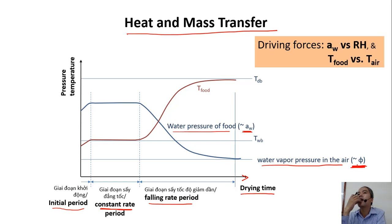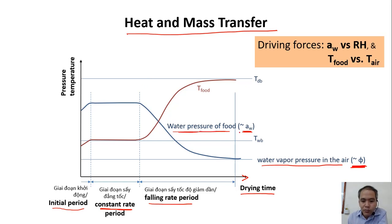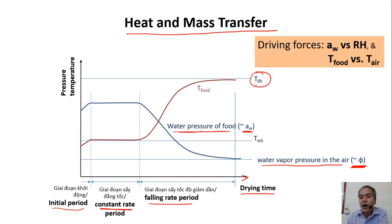The relative humidity of the air represents the water vapor pressure of the water inside the air. The water activity of the food represents the water pressure of the food. The air introduced into the drying chamber has a dry bulb temperature, and the food also has its own temperature.